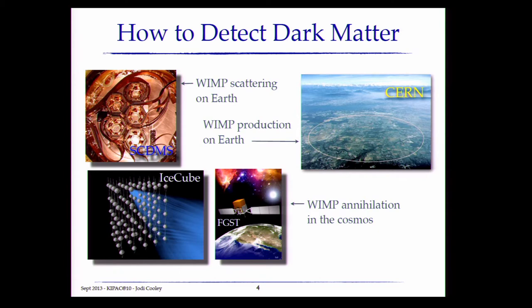You could also perhaps produce dark matter on Earth in a collider. We'll be getting a talk from CERN, from both ATLAS and CMS, on exactly how it is that you might make dark matter, how you might detect it, and how that connects back to what the direct detection experiments are seeing.